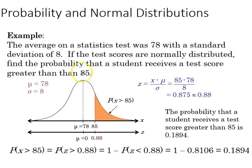We can also calculate the area to the right of a particular value, such as what are the odds of scoring higher than 85. For that one, we just take the 85, subtract the mean, 78, divide by 8, and that gives us, in this case, 0.88.